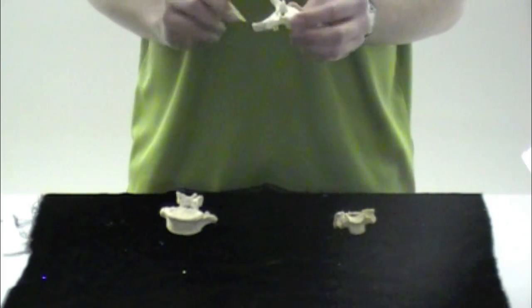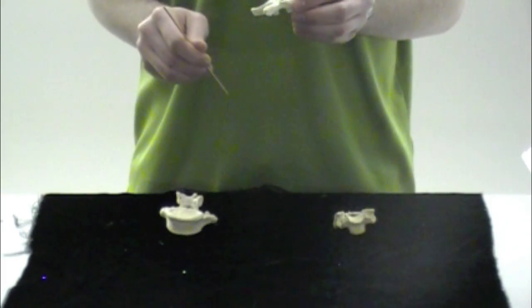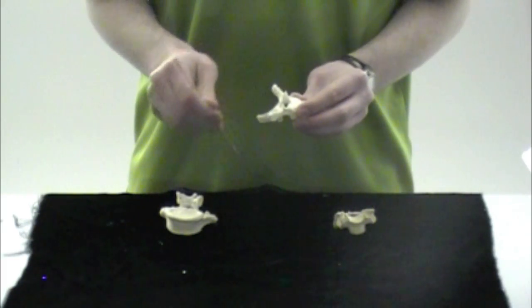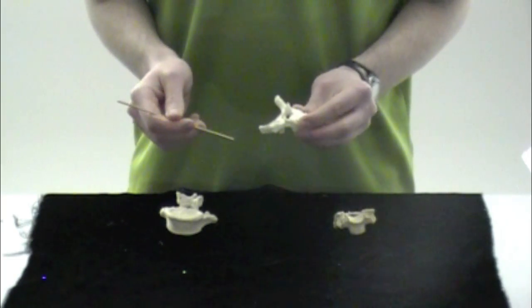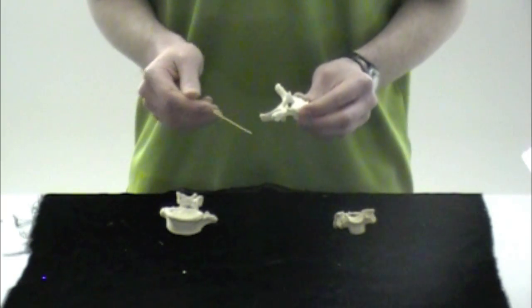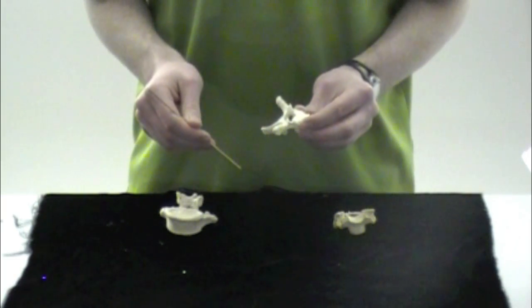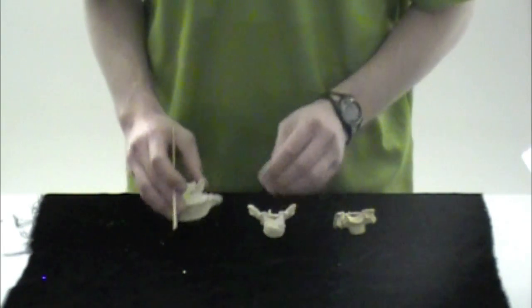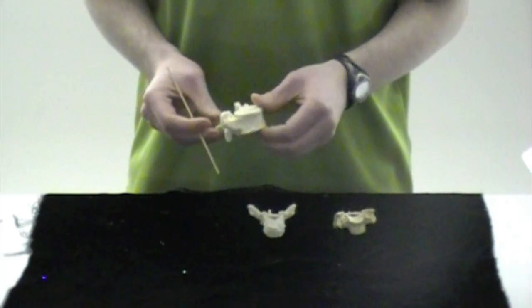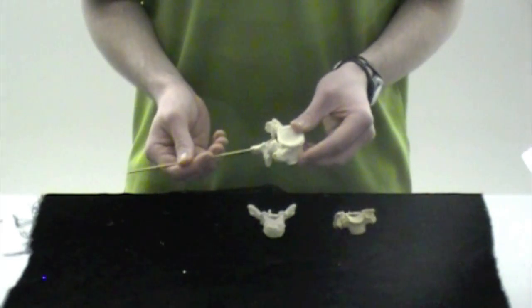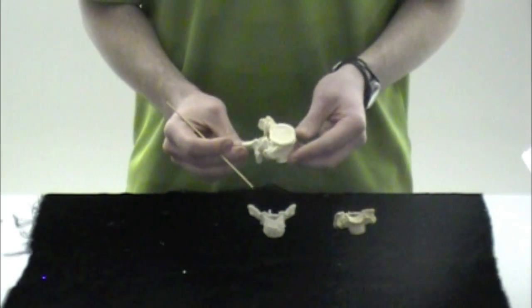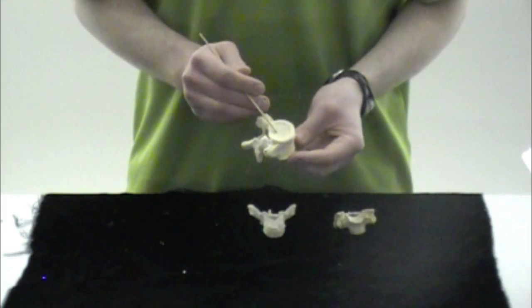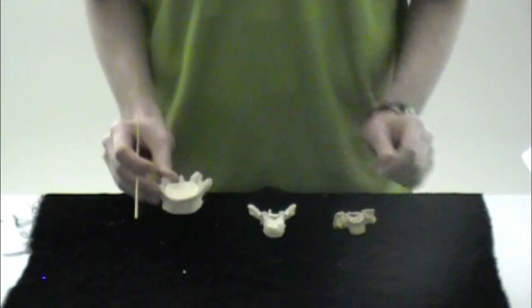The thoracic vertebrae has a spinous process that slants down at a sharp angle. So you're going to be able to use that to identify it as a thoracic vertebrae. Then the lumbar vertebrae has a little bit smaller spinous process compared to its body. So that's going to be one way that you can tell that it's a lumbar.